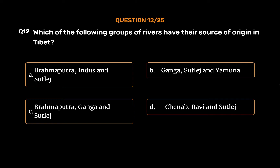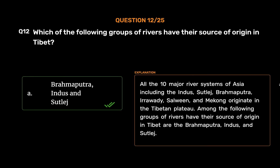The correct answer is Option A: Brahmaputra, Indus, and Satluj. All the ten major river systems of Asia including the Indus, Satluj, Brahmaputra, Iravadi, Salveen, and Mekong originate in the Tibetan plateau. Among the following groups of rivers that have their source of origin in Tibet are the Brahmaputra, Indus, and Satluj.